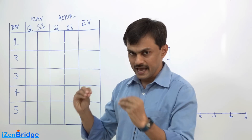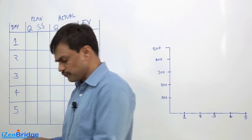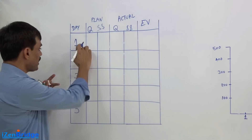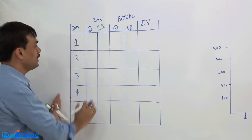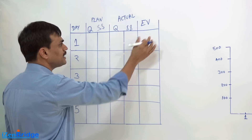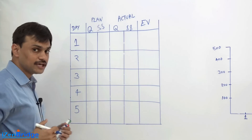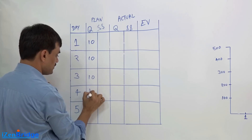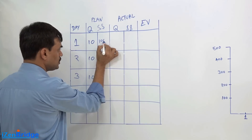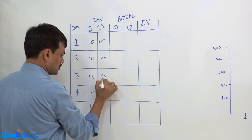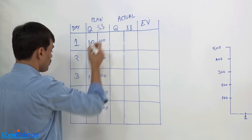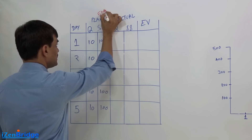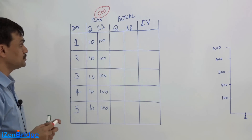Let us make this plan a little more elaborative and visible. I have a table where I have marked days 1 through 5, with columns called Plan, Actual, and Earned Value, which I will elaborate on later. As project manager of this installation project, I am planning to install 10 machines every day and spend 100 dollars per day. That makes my overall project estimate 500 dollars — I will get 50 machines done for 500 dollars.